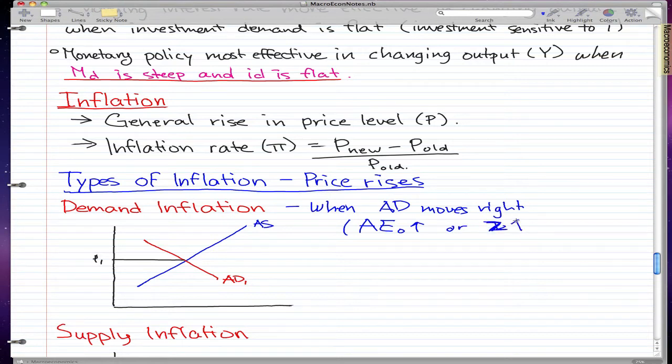This reflected in our graph would look like the following: we just move our AD to the right, and this becomes AD2, and our prices rose to P2.